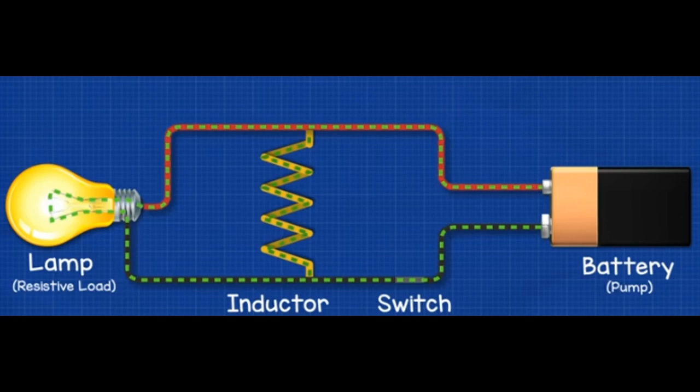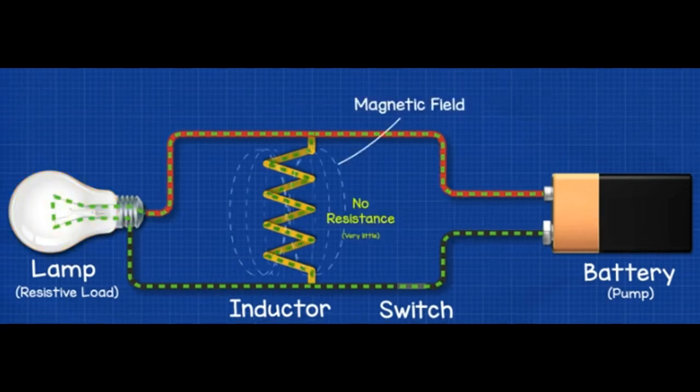When we connect the inductor in parallel with a resistive load, such as a lamp, and power the circuit, the electrons are going to fast-flow through the lamp and power it. Very little current will flow through the inductor. The resistance will reduce and allow more current to flow. Eventually, the inductor will provide nearly no resistance.